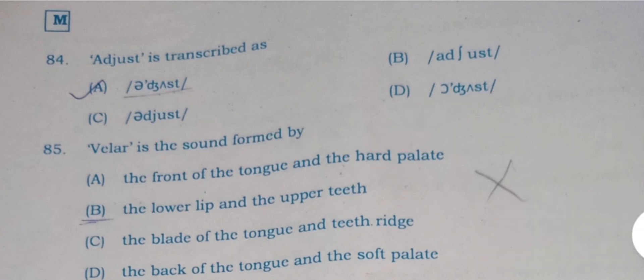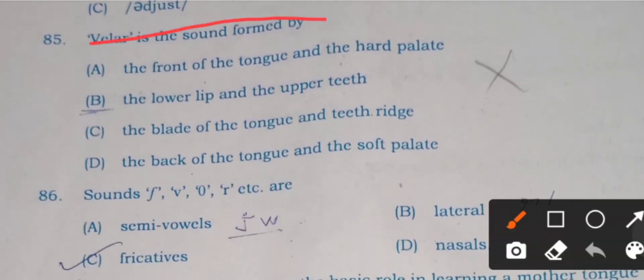Question 85 is based on phonetics: Velar is the sound formed by A) the front of the tongue and hard palate, B) the lower lip and the upper teeth, C) the blade of the tongue and teeth ridge, and D) the back of the tongue and soft palate. Here D is the right answer. Actually, velar sound is a sound which is pronounced with the back of the tongue and soft palate. When the back of the tongue and soft palate come close to each other, then we produce three velar sounds: K, G, and the semi-vowel NG.